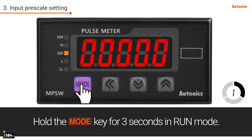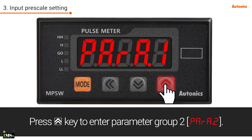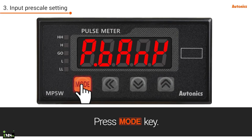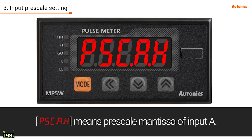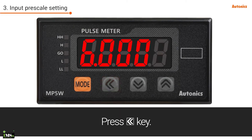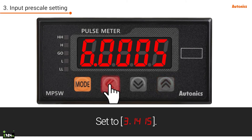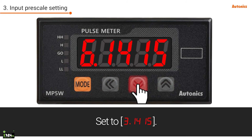Hold the mode key for 3 seconds in run mode. Press the up key to enter parameter group 2, then press the mode key. PSC.A.H means per scale mantissa of input A. Press the left key and set the value to 3.1415. Press the mode key.